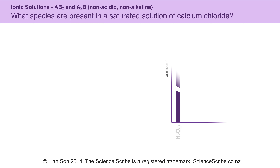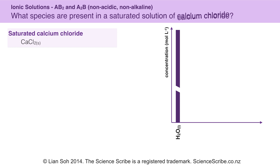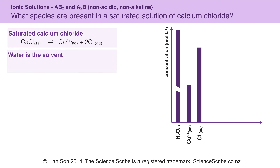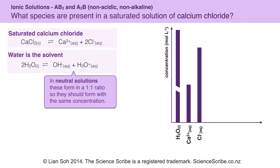My starting point is still the same as before. To make a solution of calcium chloride, I take solid calcium chloride and dissolve that in water. I end up with a 1 to 2 ratio where I form twice as many chloride ions compared to calcium 2+, so the concentration of chloride is twice as much, shown with a bar that's twice the height. I still don't include solids. Water is still my solvent and it's still neutral, so my concentration of hydroxide to hydronium should be the same as well.